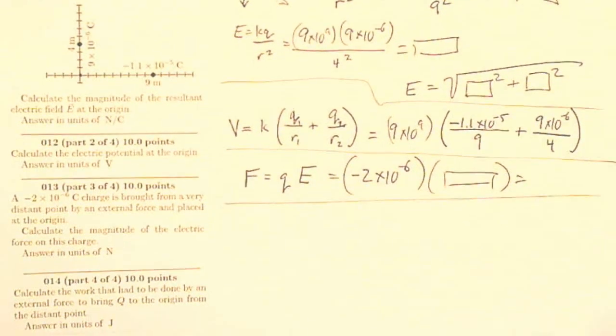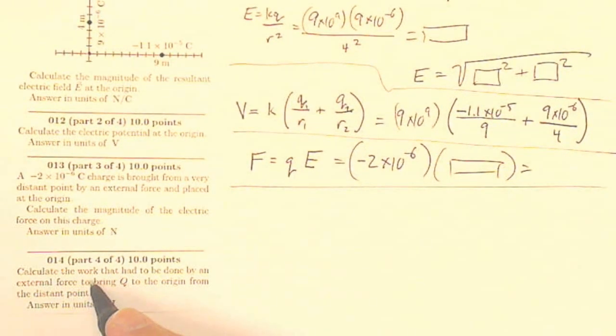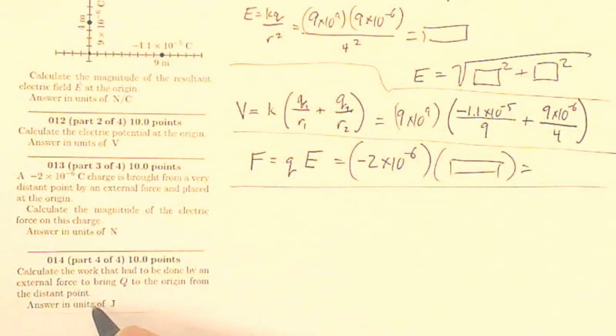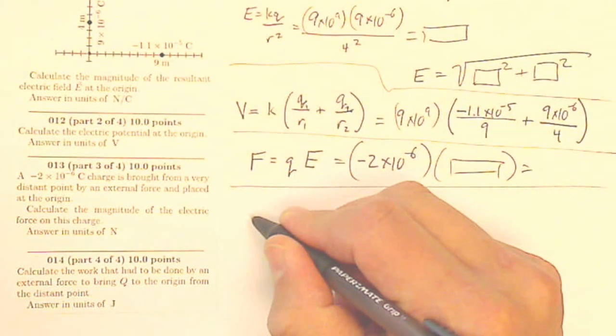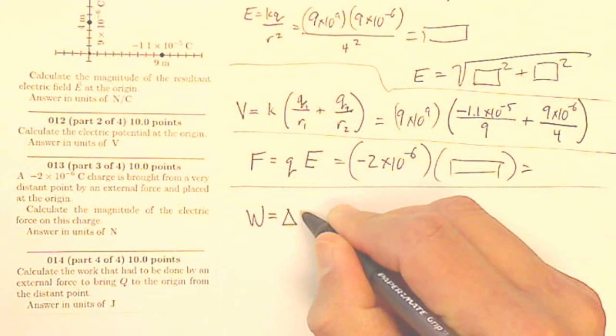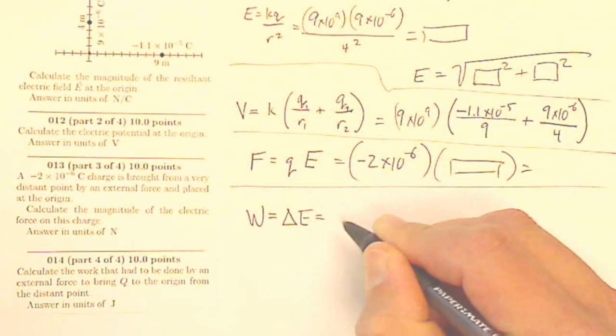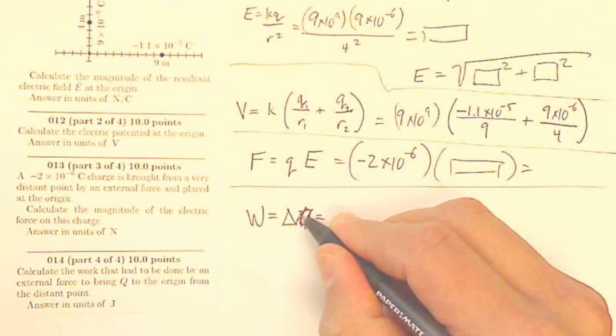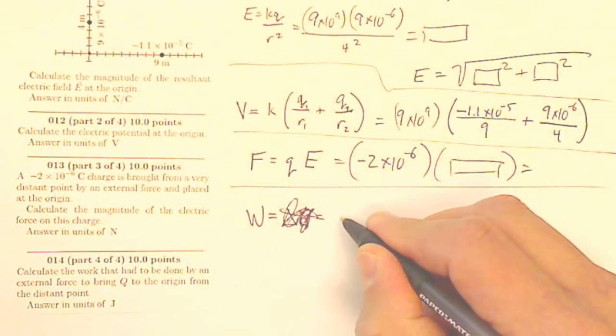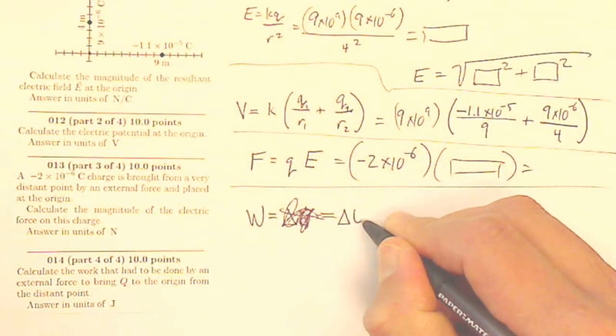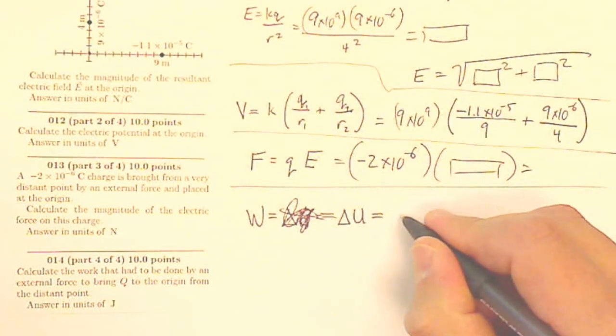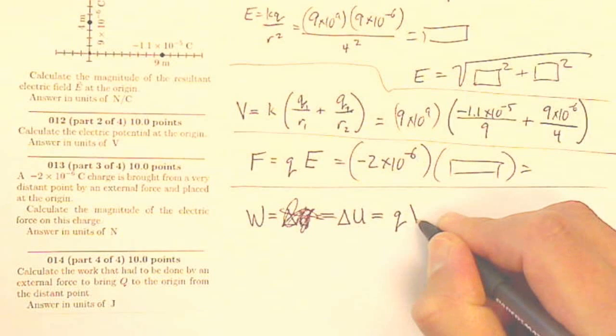Finally, it says calculate the work that had to be done by an external force to bring Q, this Q up here, to the origin from the distant point. Now I know that my work done is going to be how much my energy changed, which is in this case, sorry, don't use the E there, because that will confuse with electric field. So my work done is going to be my change in electric potential energy U, which is going to be my Q times my potential difference QV.